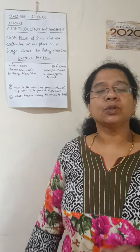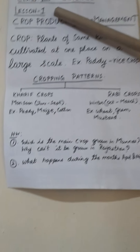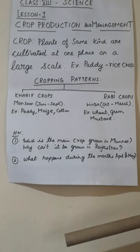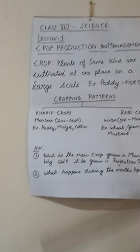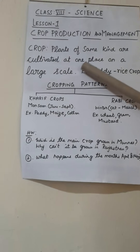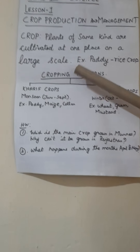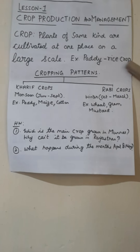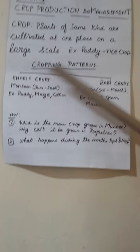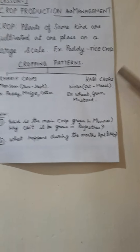Now write this down in your notebook. The heading is Lesson 1: Crop Production and Management. Write the definition of crop: plants of the same kind cultivated at one place on a large scale — for example, paddy is a rice crop. Then write the cropping patterns: two types in India — kharif crops and rabi crops.